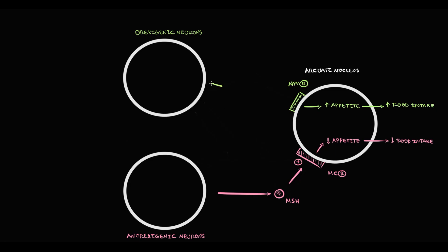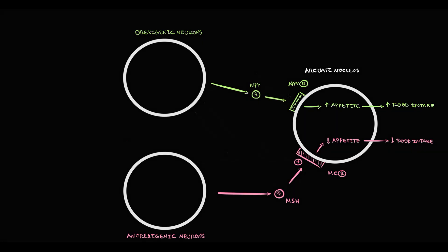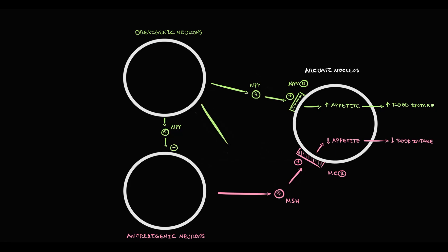Orexigenic neurons produce two substances. The first is neuropeptide Y, which has two mechanisms of action: it stimulates the NPY receptor, causing an increase in appetite, and it also inhibits the activity of anorexigenic neurons. The second substance produced by orexigenic neurons is agouti-related peptide. Agouti-related peptide inhibits the MC receptor, which leads to stimulation of appetite.